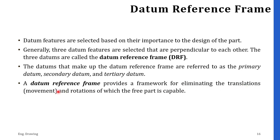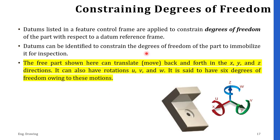The datum reference frame provides a framework for eliminating translation — that is, movement — and rotation of which the free part is capable. Now let's move to constraining the degree of freedom. Datums listed in the feature control frame are basically applied to constrain the DOF, or degree of freedom, of any part with respect to the datum reference frame. Datums can be identified to constrain the degree of freedom of the part to immobilize it for inspection. The free part can translate back and forth in the X, Y, and Z directions, and it can also have rotations U, V, and W — six degrees of freedom in total.